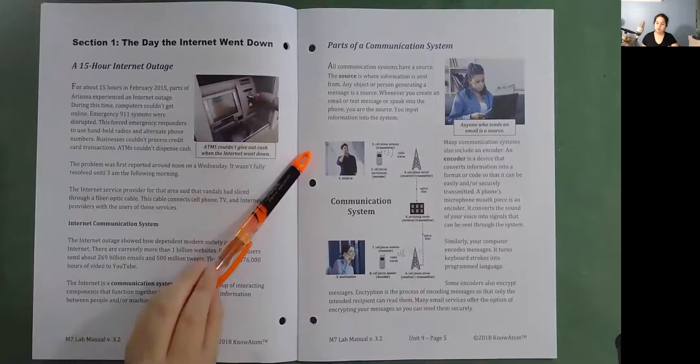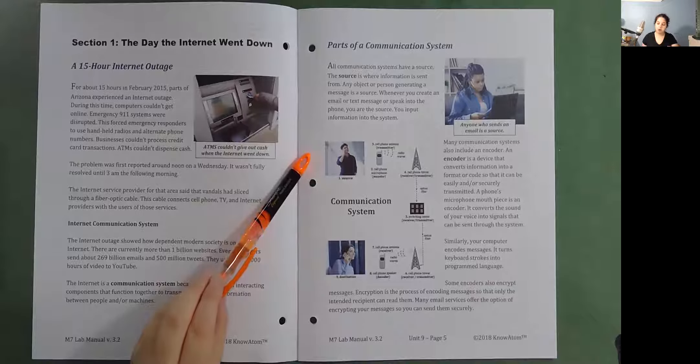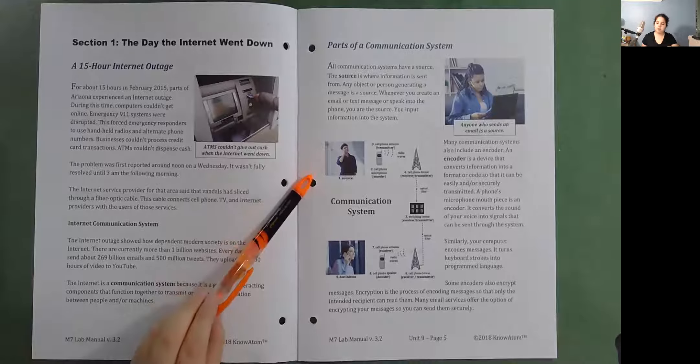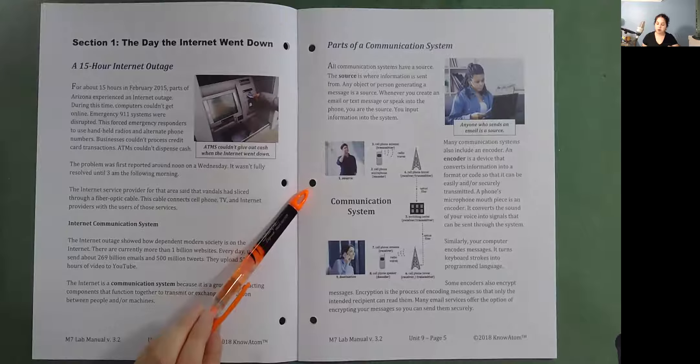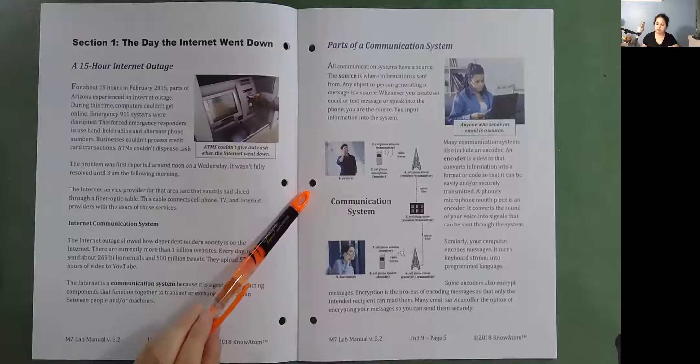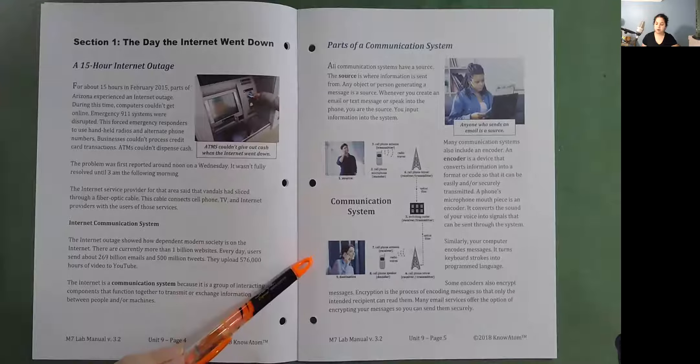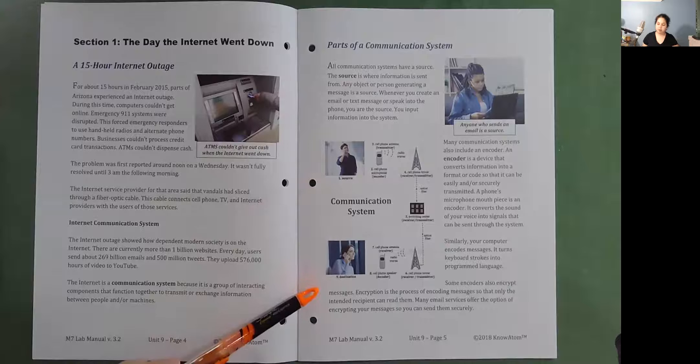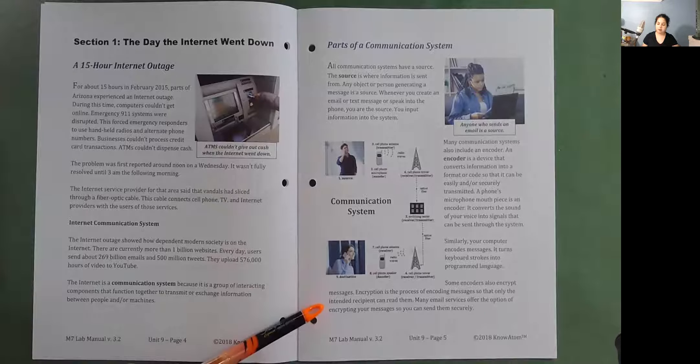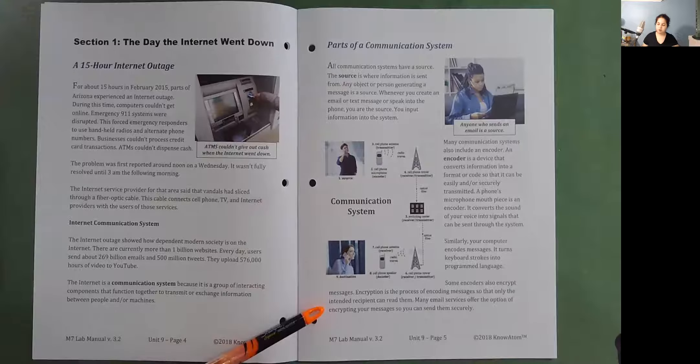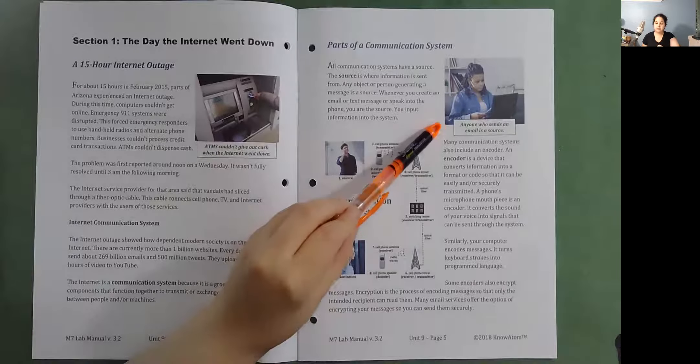Many communication systems also include an encoder. An encoder is a device that converts information into a format or code so that it can be easily and or securely transmitted. A phone's microphone mouthpiece is an encoder. It converts the sound of your voice into signals that can be sent through the system. Similarly, your computer encodes messages. It turns keyboard strokes into programmed language. Some encoders also encrypt messages. Encryption is the process of encoding messages so that only the intended recipient can read them. Many email services offer the option of encrypting your messages so you can send them securely. Anyone who sends an email is a source.